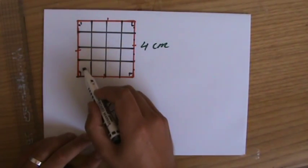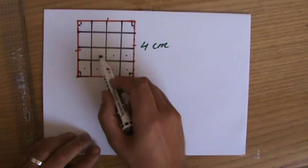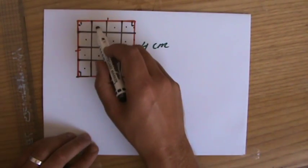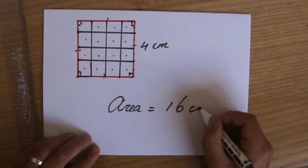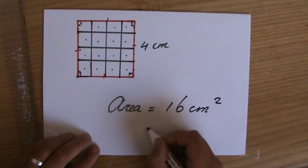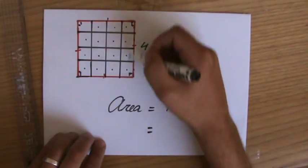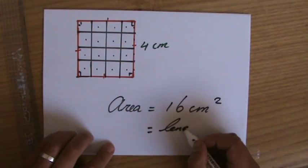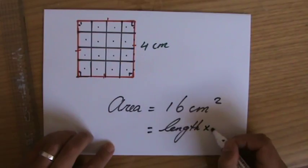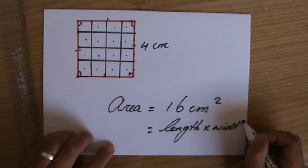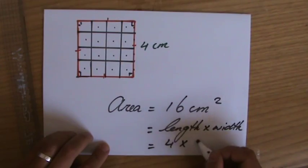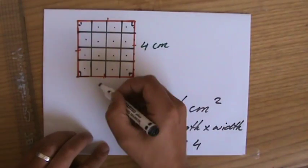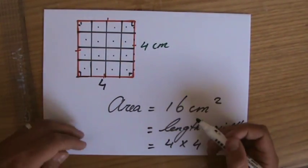So I have 1, 2, 3, 4, 5, 6, 7, 8, 9, 10, 11, 12, 13, 14, 15, 16 of them. So the area is 16 centimeters squared. Because also for a square, it is length times the width, which is going to give you the area. 4 times 4, which is going to give you 16 centimeters squared.